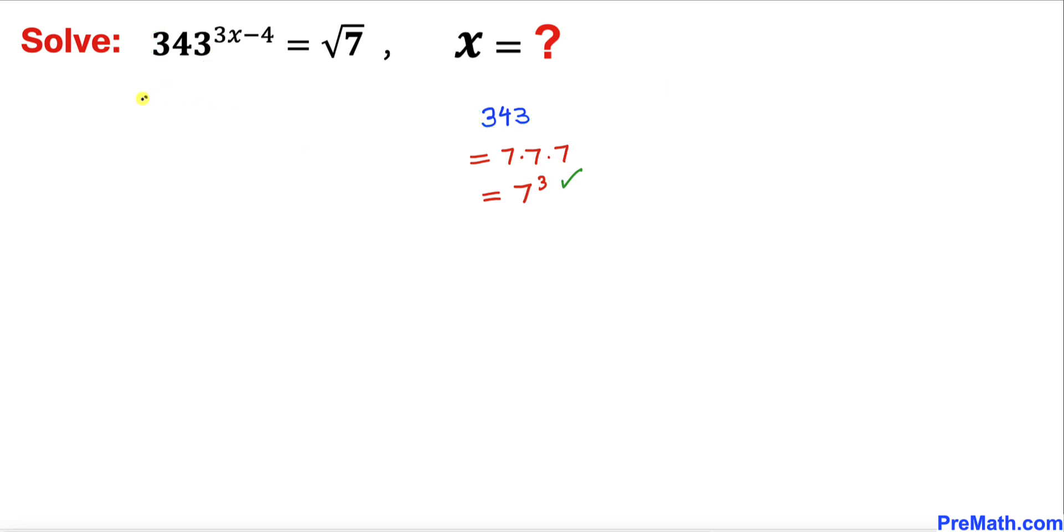So the left hand side could be written as 7 power 3 and then whole power 3x minus 4 equals to. Now let's focus on this square root of 7, and this square root of 7 could be written as 7 power 1 over 2 according to this basic rule.